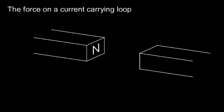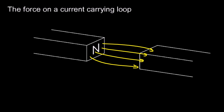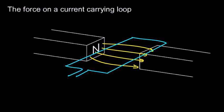Now let's take that same concept and apply it to a loop of wire. The loop doesn't have to be round — to keep it simple I'll draw it square. First, let's draw in the field lines representing the magnetic field pointing from north to south. Now let's draw a loop of wire in three-dimensional perspective, and imagine putting electric current in one end and out the other.